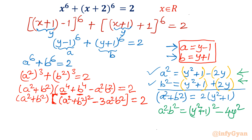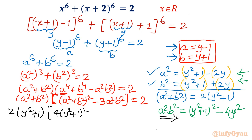Now I substitute the values back. a²+b² = 2(y²+1), so (a²+b²)² = 4(y²+1)². The full expression becomes: (a²+b²)·[(a²+b²)² - 3a²b²] = 2(y²+1)·[4(y²+1)² - 3(y²+1)² + 12y²] = 2.